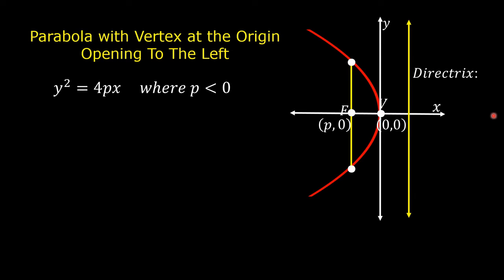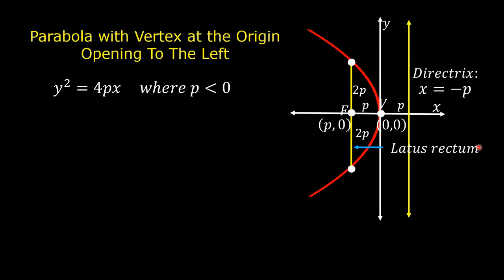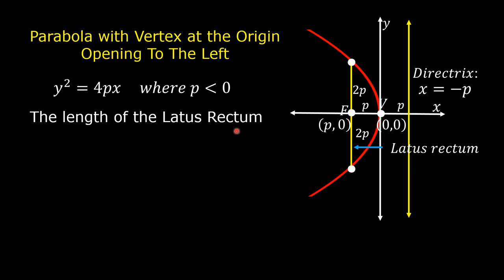This yellow line is the directrix. The equation of the directrix is x is equal to negative p. This yellow segment is the Latus Rectum. The distance of the focus from the vertex is p, and the distance of the directrix from the vertex is also p. The distance of the focus from one of the endpoints of the Latus Rectum is 2p. This is also 2p. The length of the Latus Rectum is equal to the absolute value of the sum of 2p and 2p, or the absolute value of 4 times p. So, the length of the Latus Rectum is equal to the absolute value of 4p.